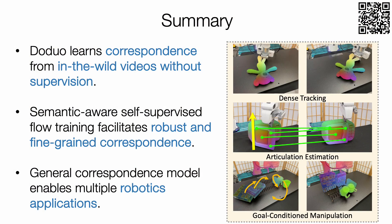In conclusion, Doodle learns dense visual correspondence from in-the-wild videos and achieves robust and fine-grained correspondence. This generic correspondence model enables multiple robotic applications. Our code and model are all publicly available. Please scan the QR code for more information. Thank you.